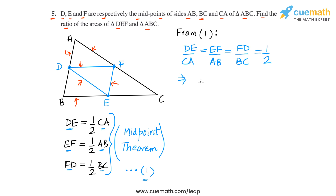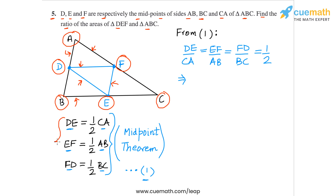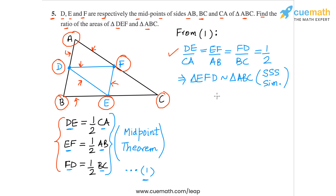What is the ratio of corresponding sides? If we take the large triangle as ABC, then corresponding to vertex A we will have vertex E, corresponding to vertex B we will have vertex F, and corresponding to vertex C we will have vertex D. This is the only vertex correspondence that makes all three ratios equal. So we write triangle EFD is similar to triangle ABC, using the SSS similarity criterion.